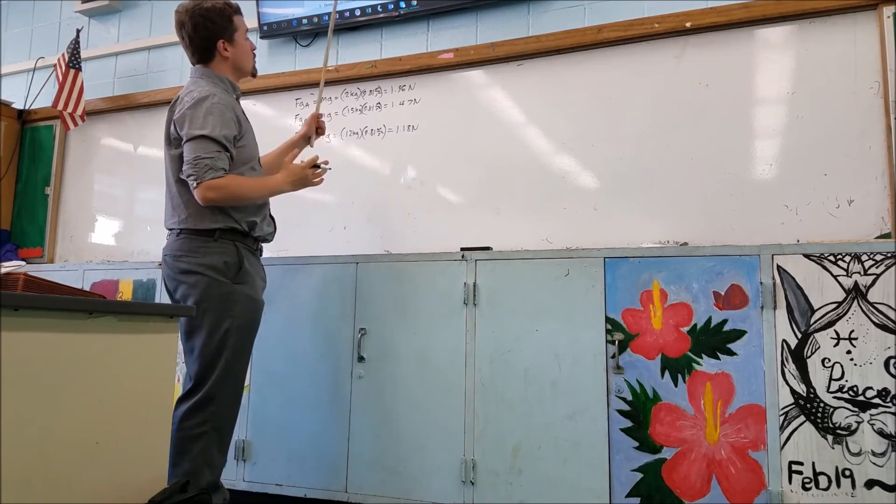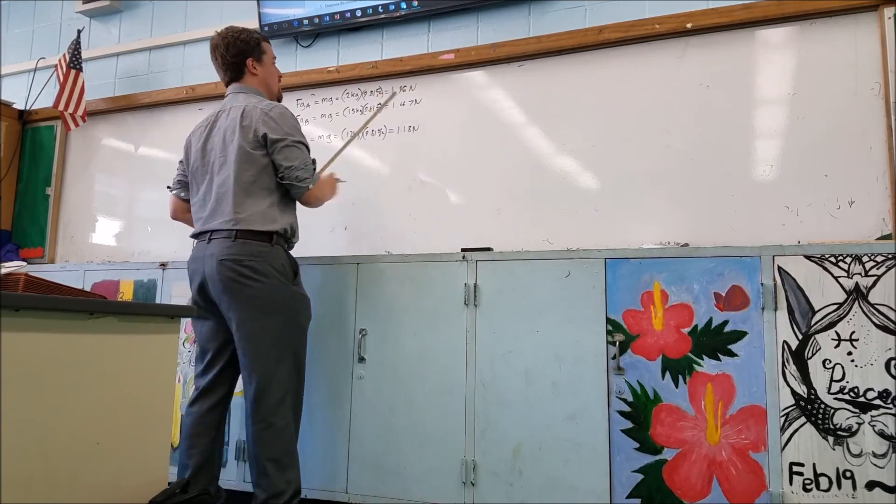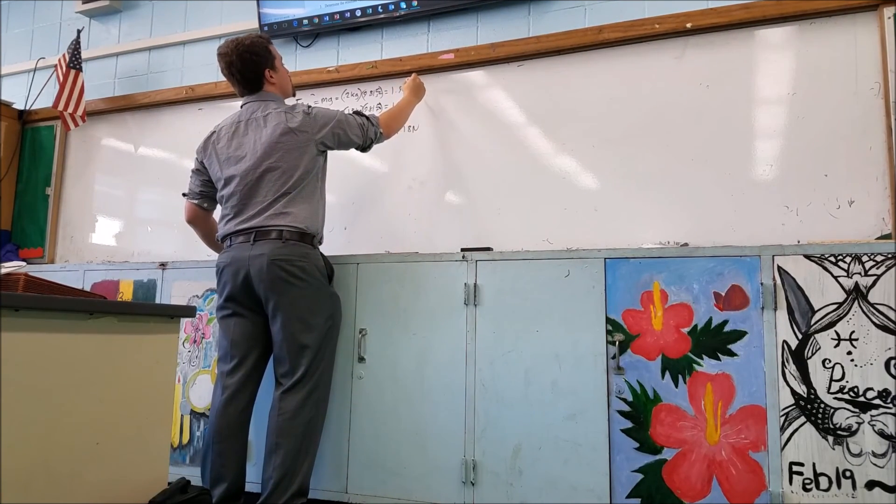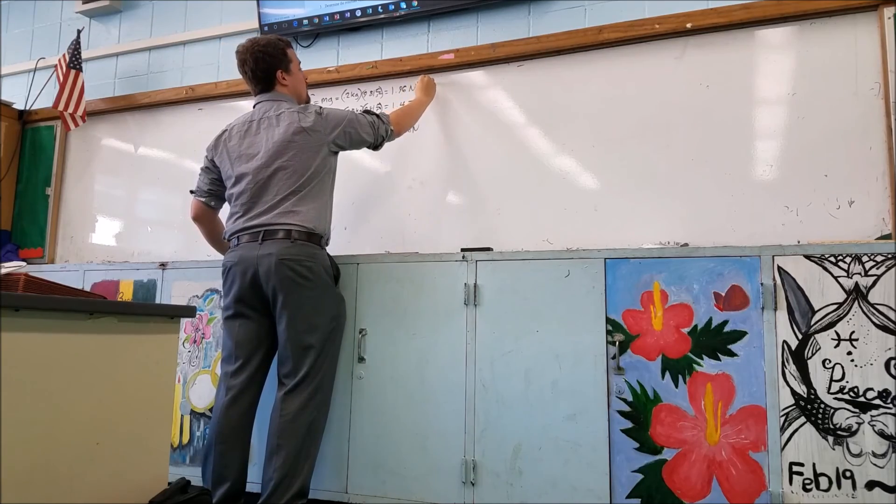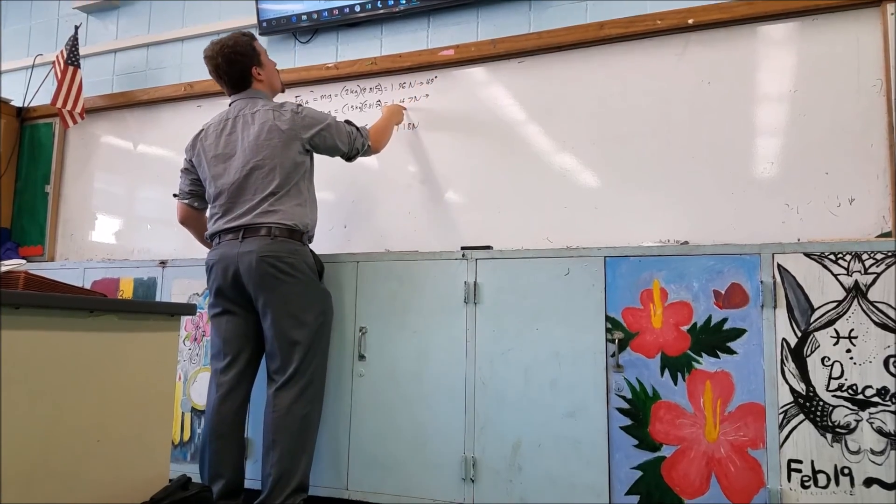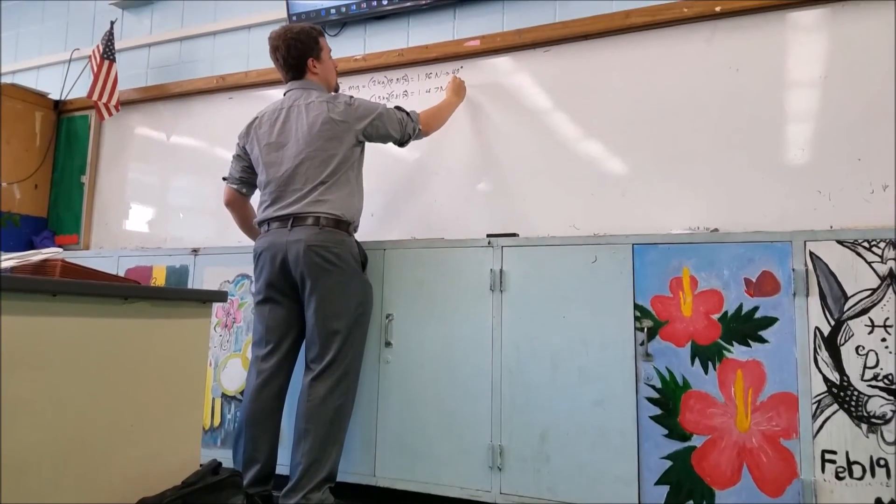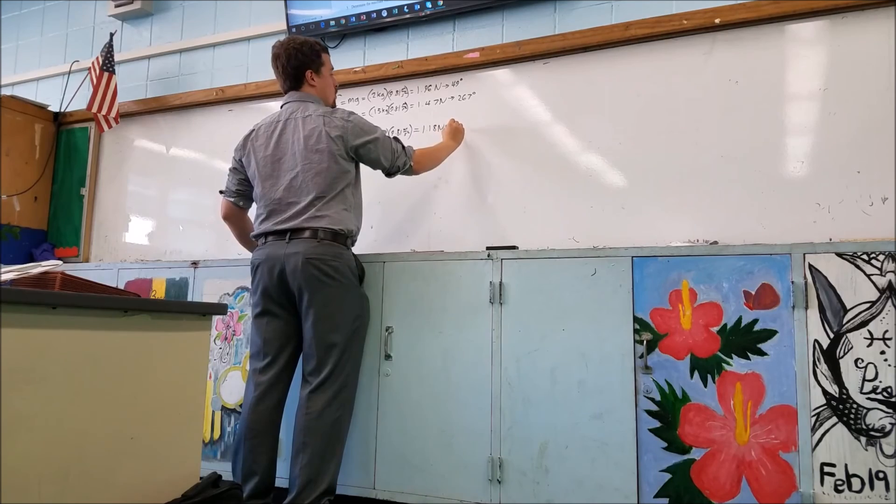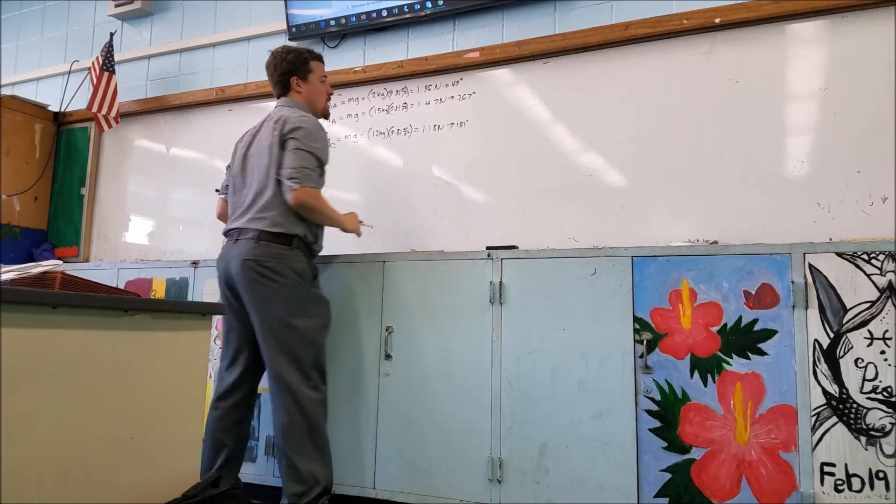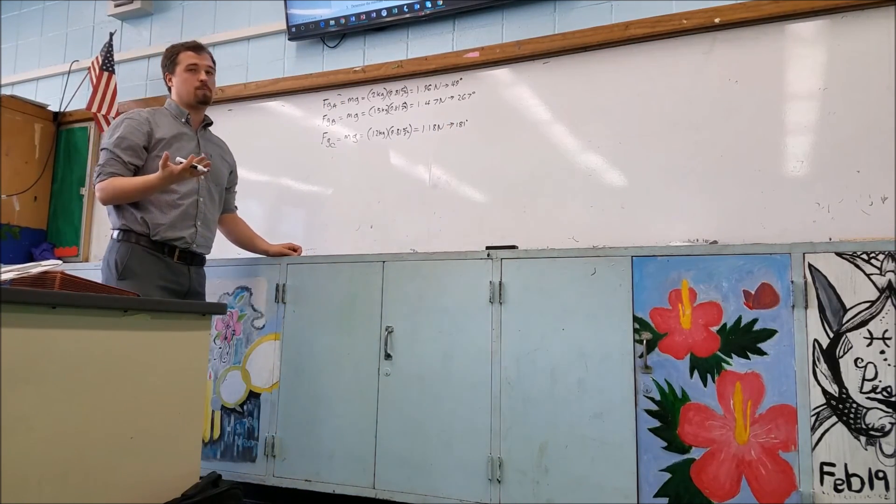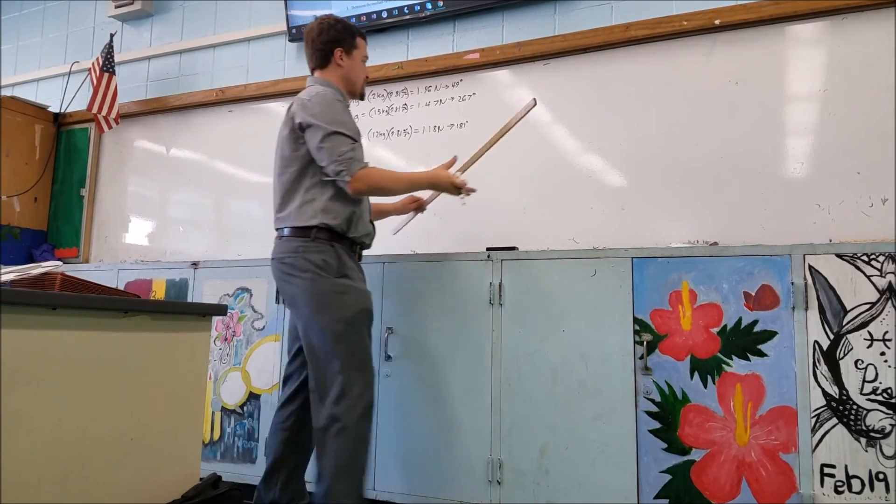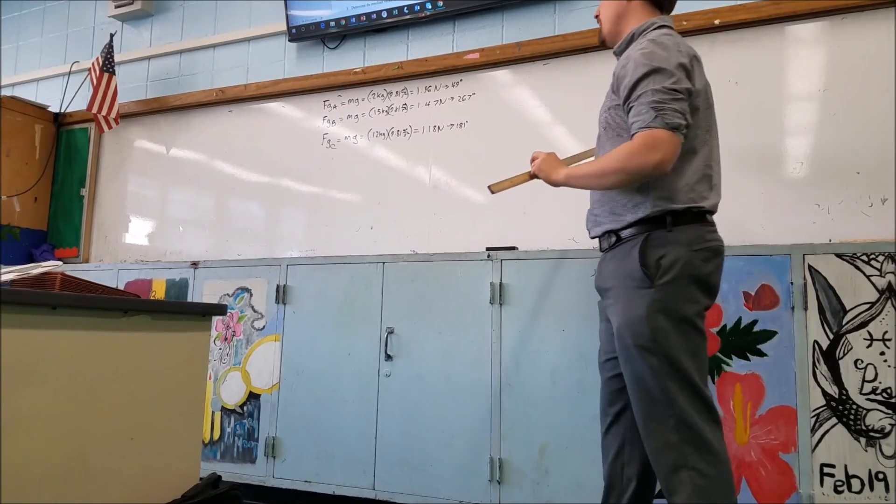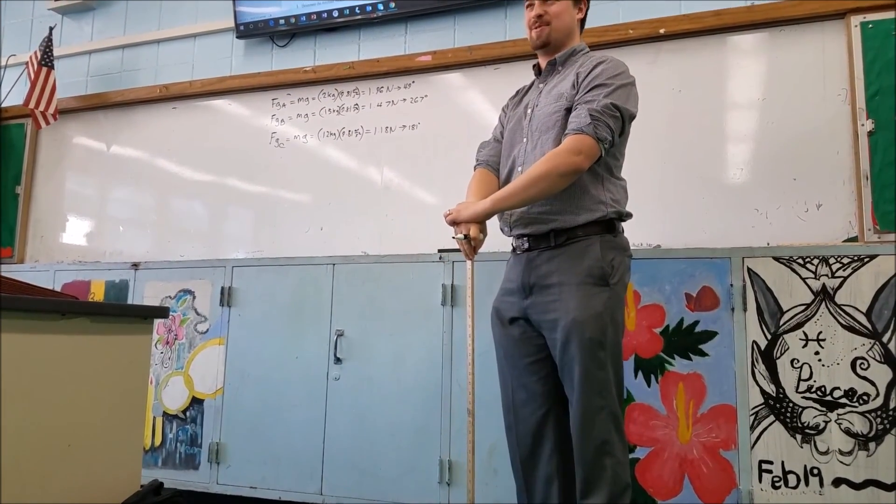So the next thing we need to do is we want to make the scale diagram using this. Because I know the 1.96 newton one is at 49 degrees according to my diagram, this one was 267 degrees, and this one was 181 degrees. So the next thing we need to do is figure out an appropriate scale. To do this, could we please stop talking? It makes it a little hard to focus. Thank you so much.